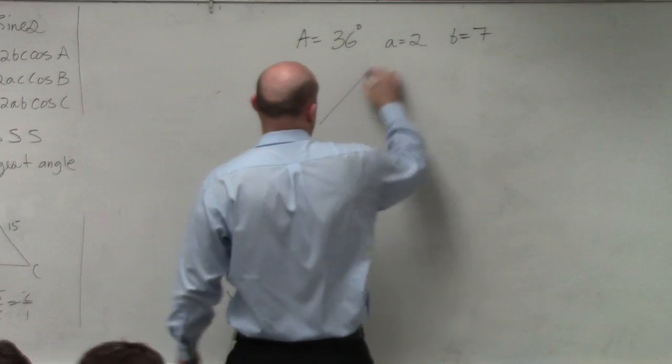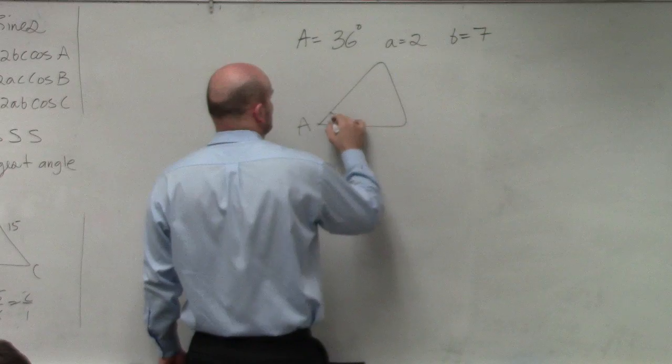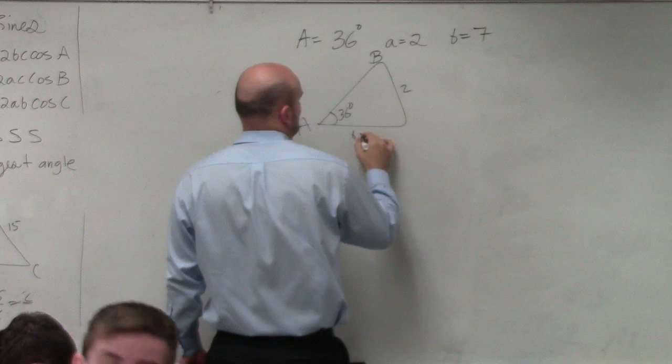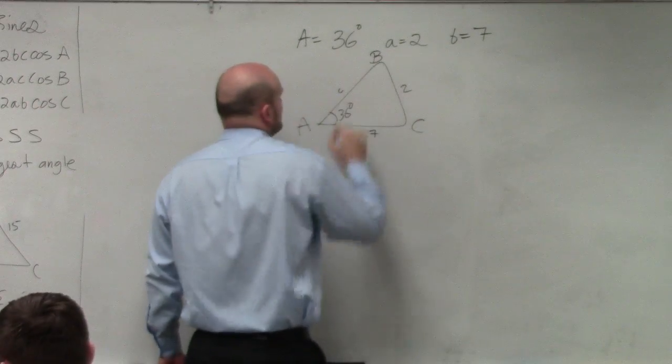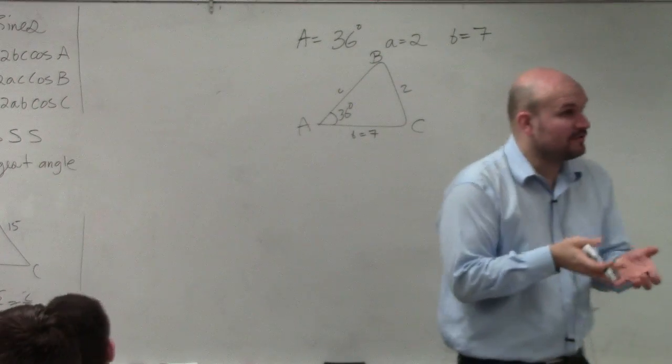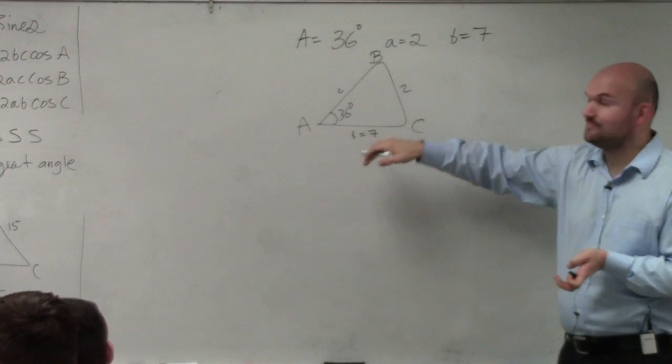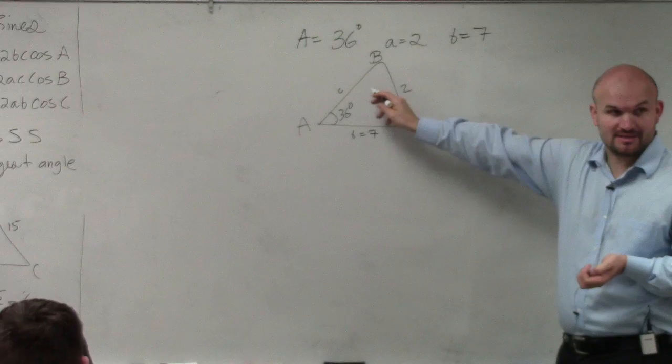And so if I'm going to draw this, I always like to draw so I can visualize what I'm looking at. So I see that I do have a ratio here. I have A and A, and I have B, so I can solve for sine of B, correct?